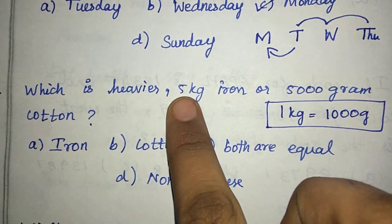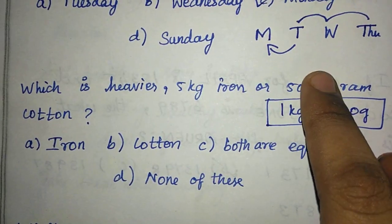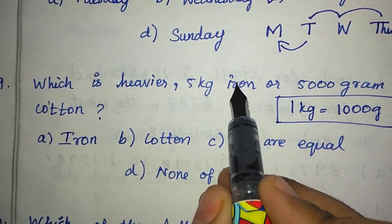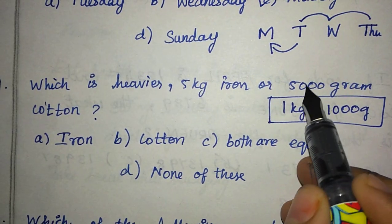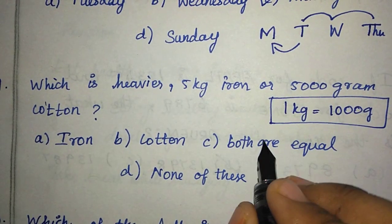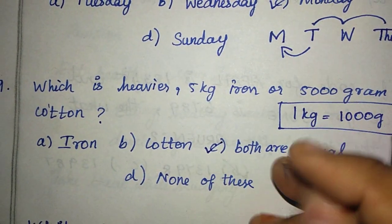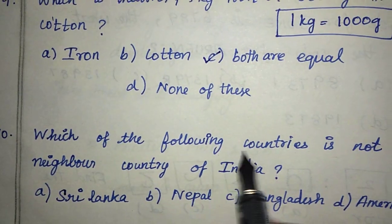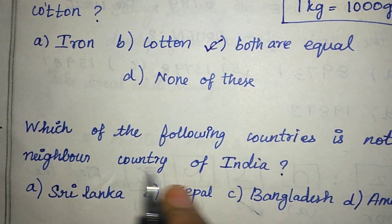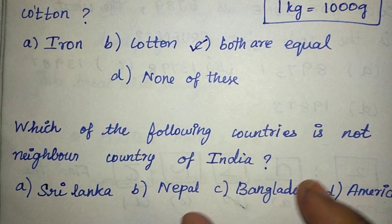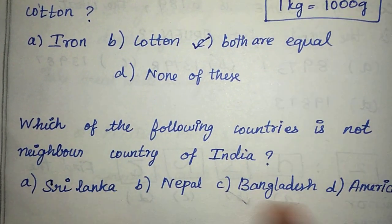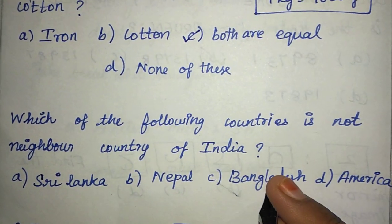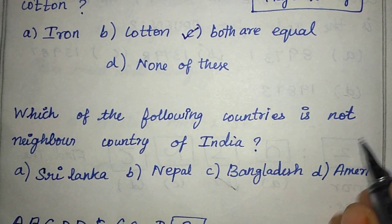If we look at this, we have grams. 5kg is equal to 5000g. So cotton and iron — iron is 5kg and cotton is 5000 grams, so both are equal. Option C is the right answer. Next: which of the following countries is not a neighbour of India? Sri Lanka is a neighbouring country, Nepal is a neighbouring country, Bangladesh is a neighbouring country, and America is not a neighbouring country. So option D is the right answer.